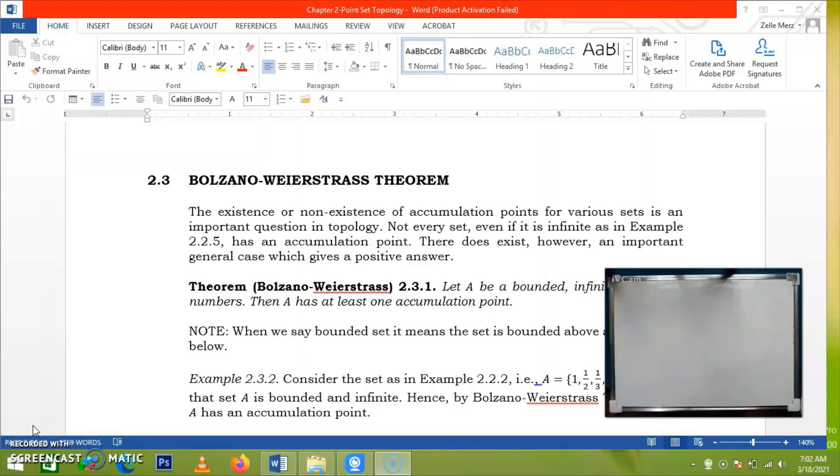We call it the Bolzano-Wierstrass theorem. It states that for every bounded infinite set of real numbers, the set has at least one accumulation point.